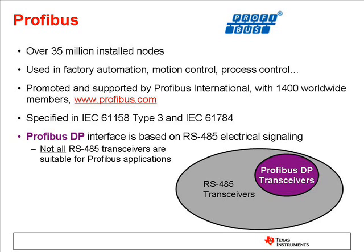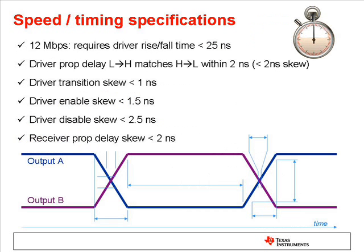Beyond the standard RS-485 requirements, PROFIBUS designers should consider several specific characteristics for the transceivers. PROFIBUS uses signaling rates up to 12 megabits per second, so the transceiver should be capable of that speed. In addition, the propagation delays should be well controlled and matched between rising and falling transitions. This allows for timing budget precision at the system level.